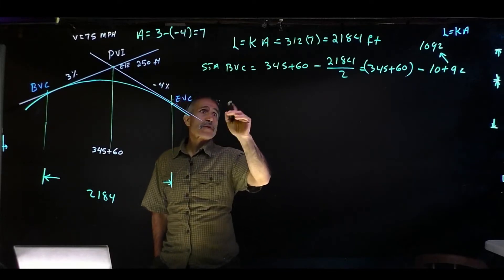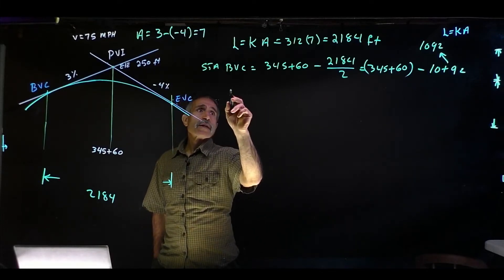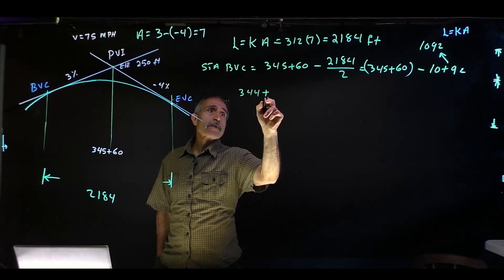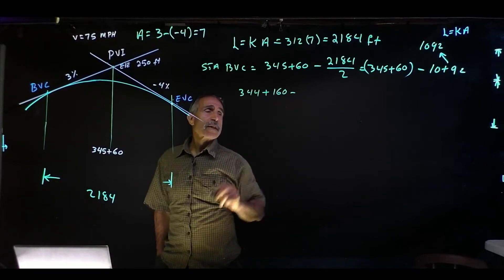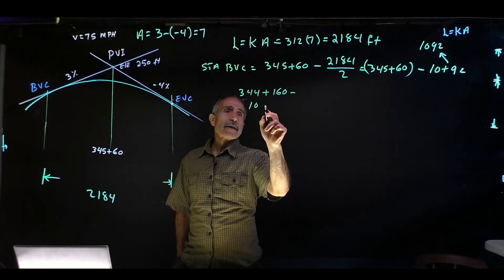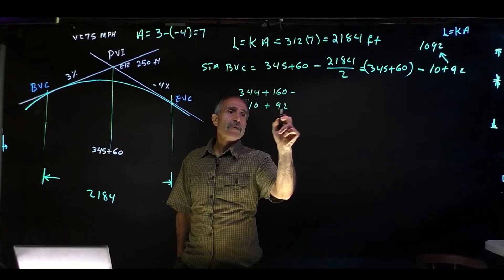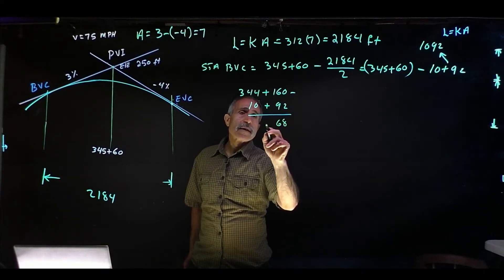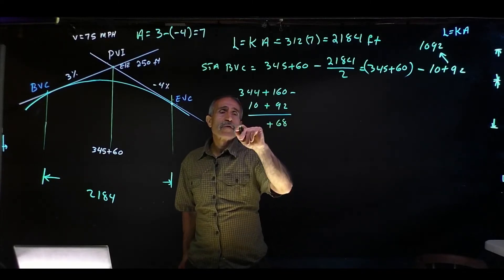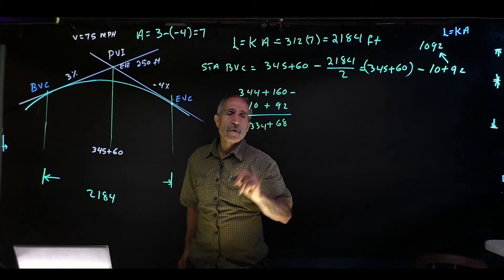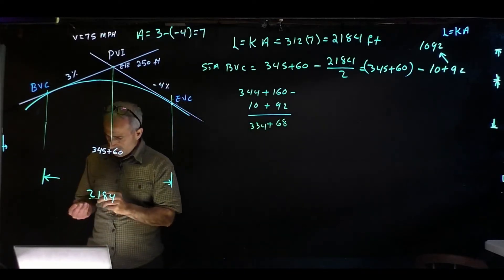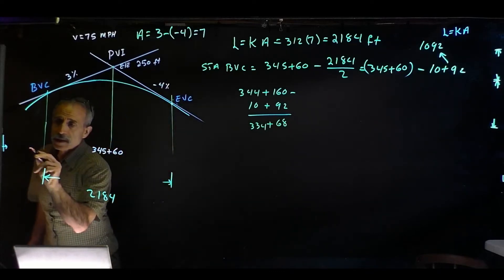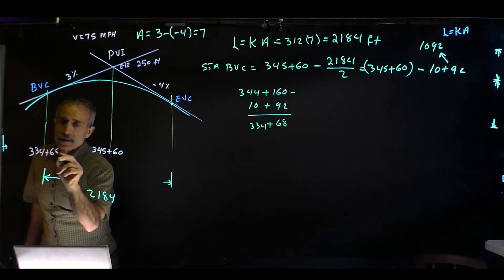Now I'm going to find out what station this is. I'm going to deduct those two from each other. I can rewrite 345+60 as 344+160, then minus 10+92. 160 minus 92 is 68, and 344 minus 10 is 334.